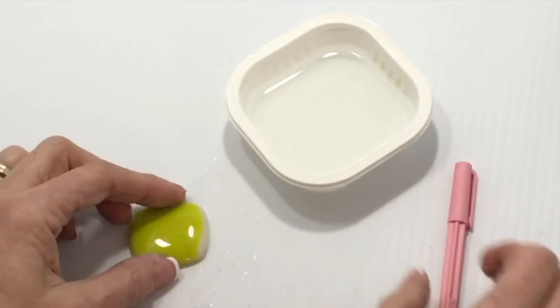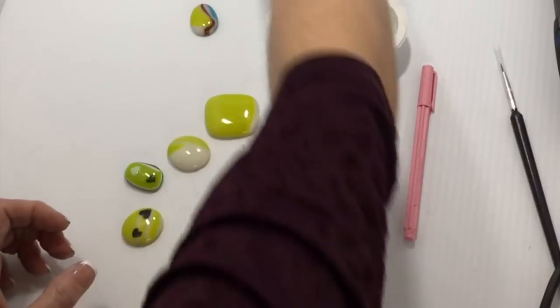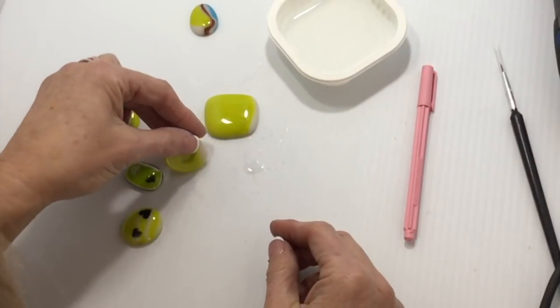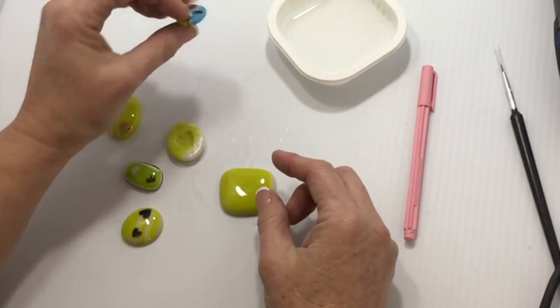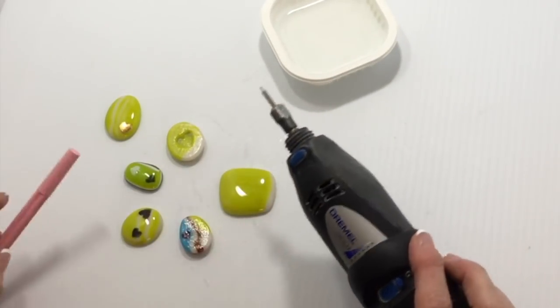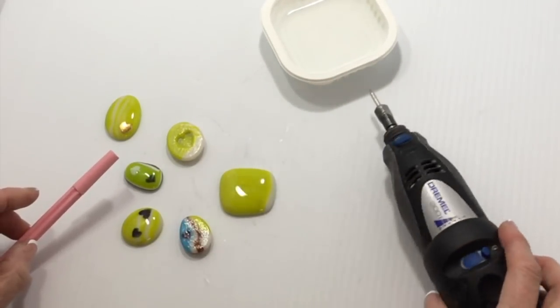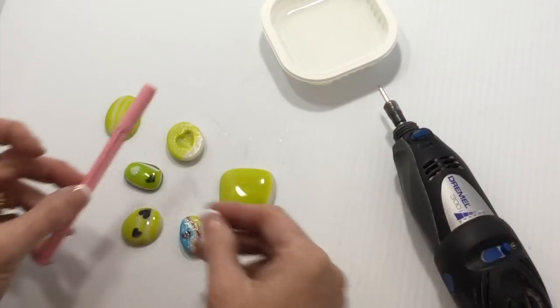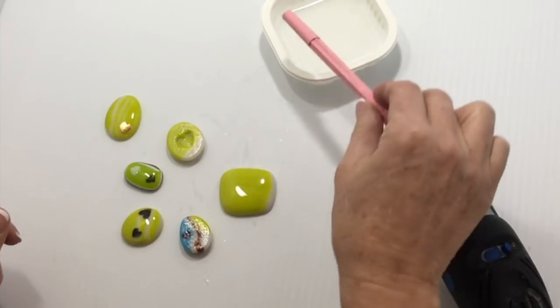It's one of my favorite ways to sign my work. So when you look at all of these, they all have different possibilities and options, but my preference would be either hand etching with a Dremel-type tool or using the titanium pen.